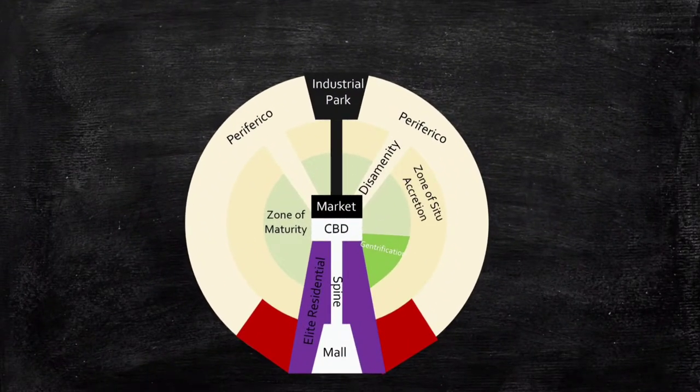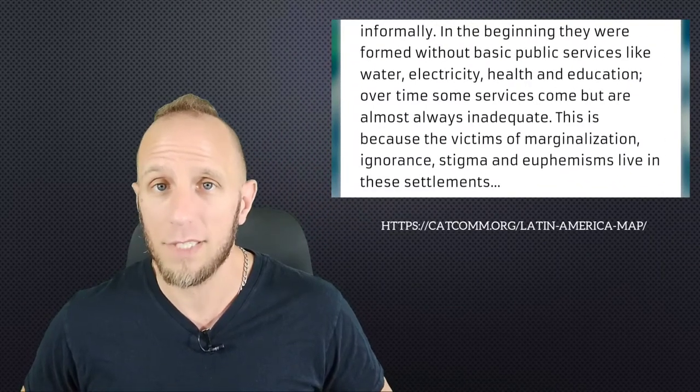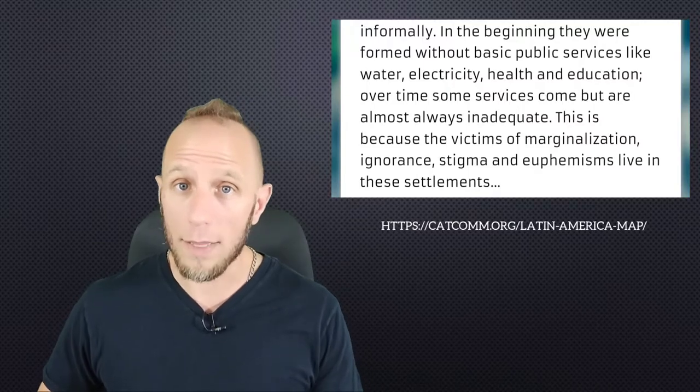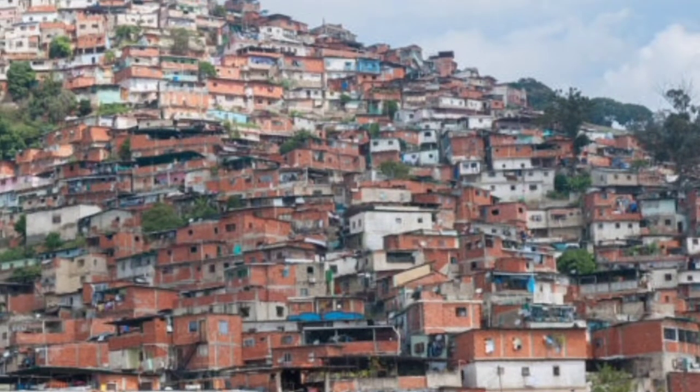Outside of the zone of in situ accretion lies the periphery and the zone of disamenity. These are made up of squatter settlements. Squatter settlements are residents that are essentially homeless — they build ramshackle houses on land that they don't own, and in the case of Latin American cities, they exist on the periphery or on the outside of the city. Since there is no structured planning, many squatter settlements have very little sanitation, unstable electricity or no electricity at all, and are prone to fires and other issues. Squatter settlements also tend to have very high population density, and these places are so impoverished that they operate like urban frontiers that are often in practice outside of the control of the city.